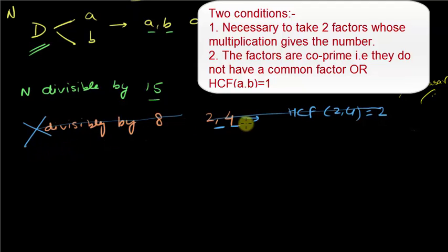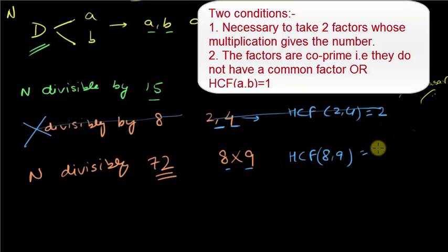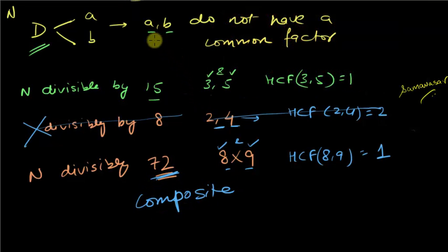This approach can only be used if the factors do not have a common factor, and they do not necessarily need to be prime. For example, if I want to check whether any number is divisible by 72, I know that 72 equals 8 times 9. Though 8 and 9 are not prime, they do not have a common factor — HCF of 8 and 9 is 1. Hence, to check divisibility by 72, I can check whether the number is divisible by 8 and 9. If it is divisible by both 8 and 9, it will necessarily be divisible by 72 as well. This test works only for composite numbers, since you need to be able to find factors.